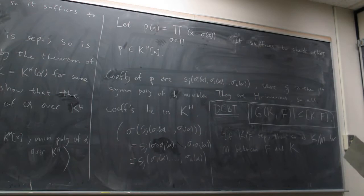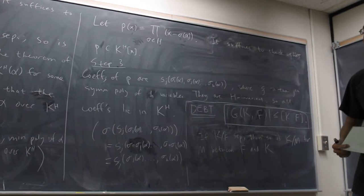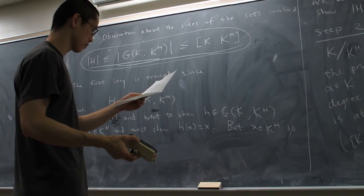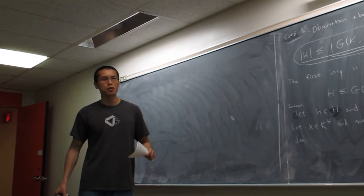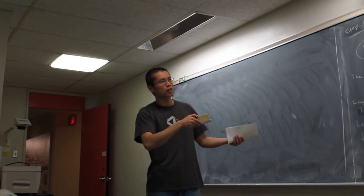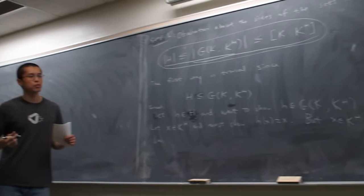Step three is the key observation that the coefficients are symmetric polynomials. So the top-to-bottom result really does imply item one — that the fixed field operation is an inverse going one way — and item two — that the Galois group operation is an inverse going the other way — so we've basically proved the top-to-middle results in the fundamental theorem.